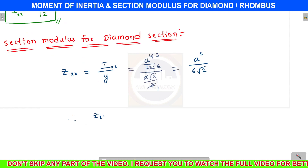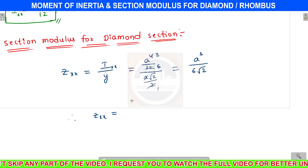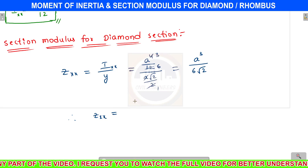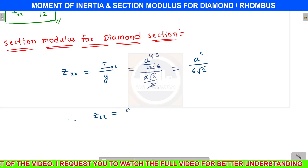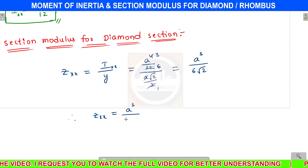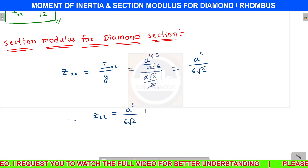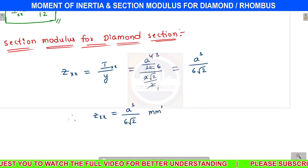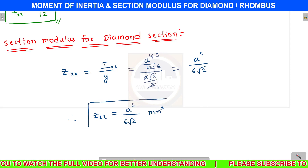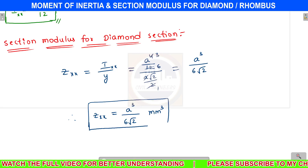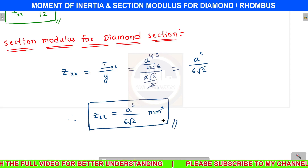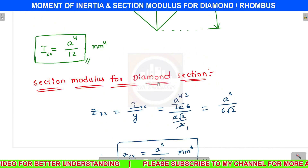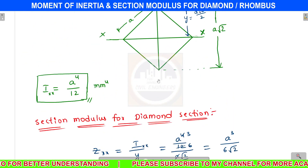A cubed by 6 root 2 is the section modulus for a square with one vertical diagonal, or a diamond section, or a rhombus. Units are m cubed. That's it for this video, thank you for watching, and don't forget to subscribe to my channel.